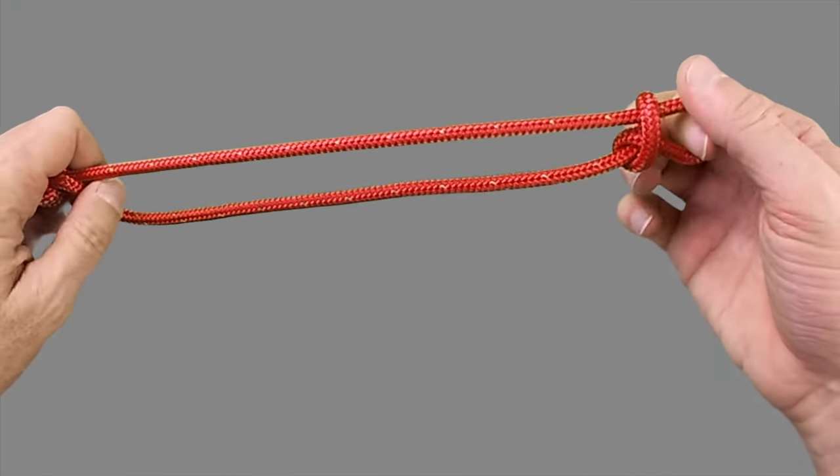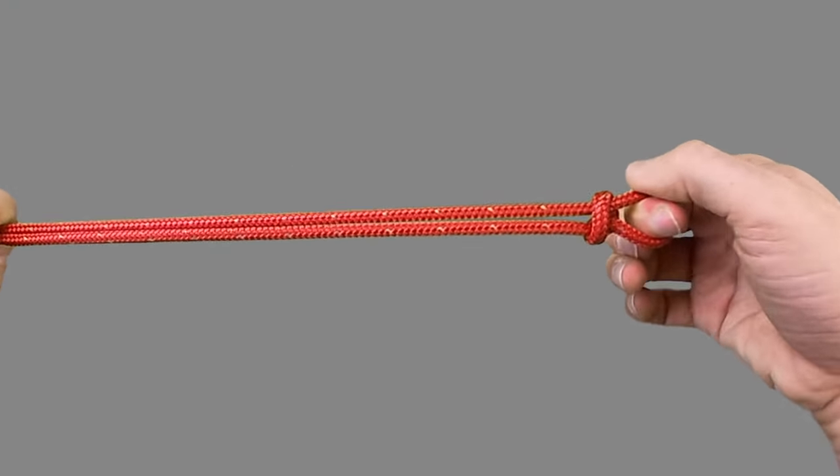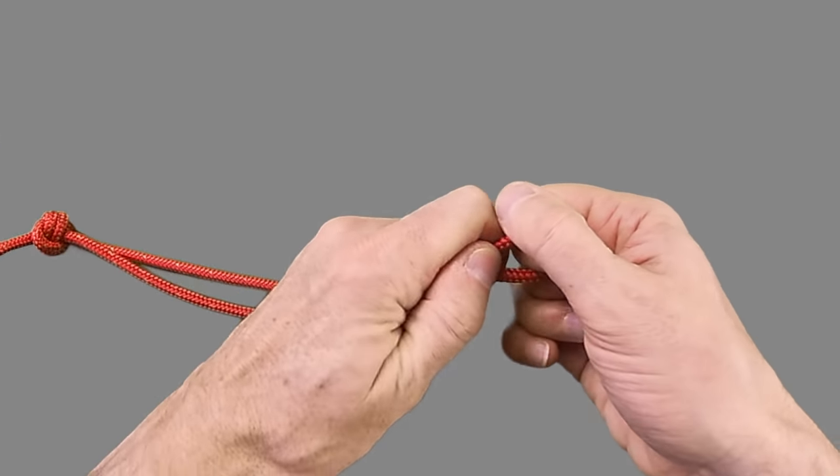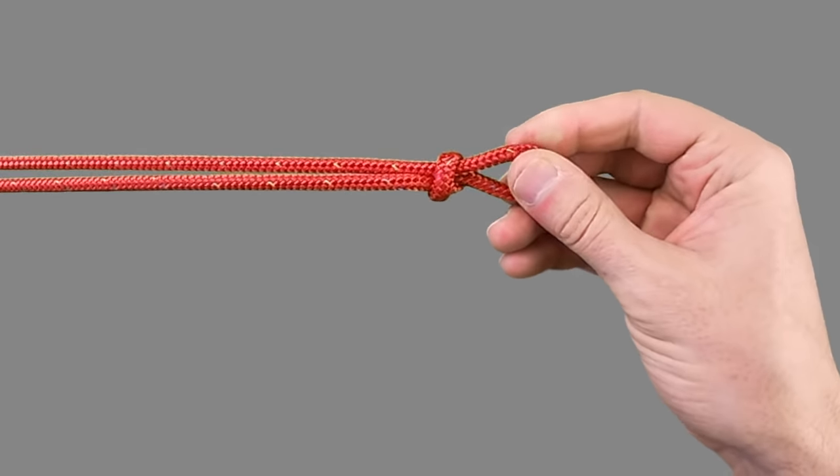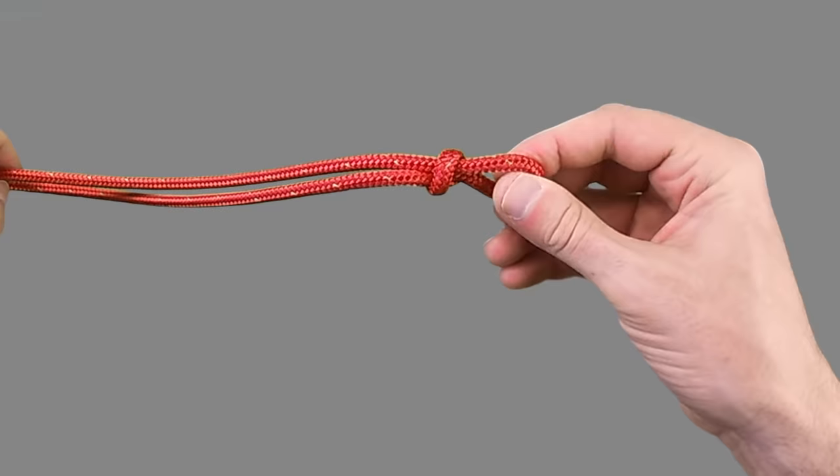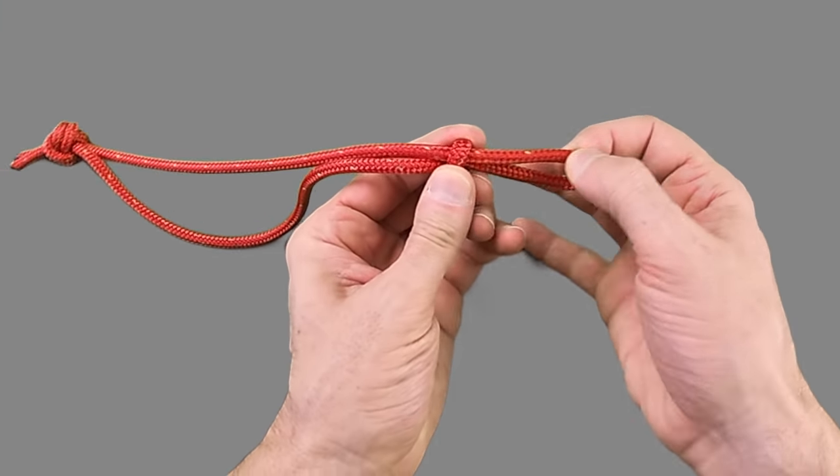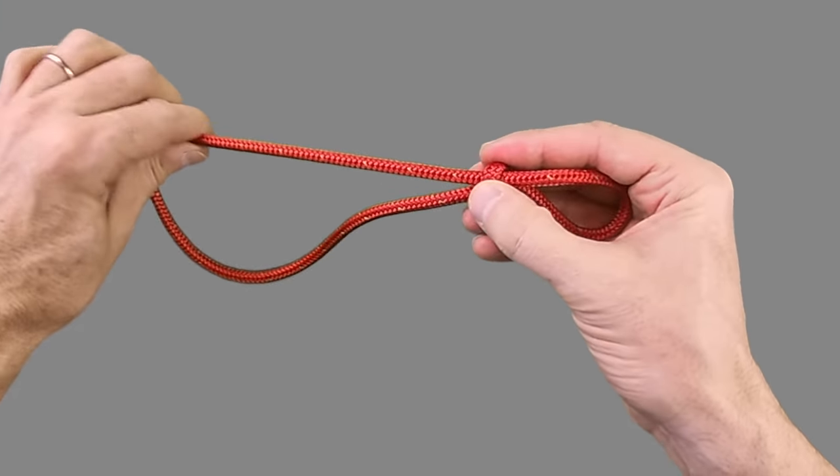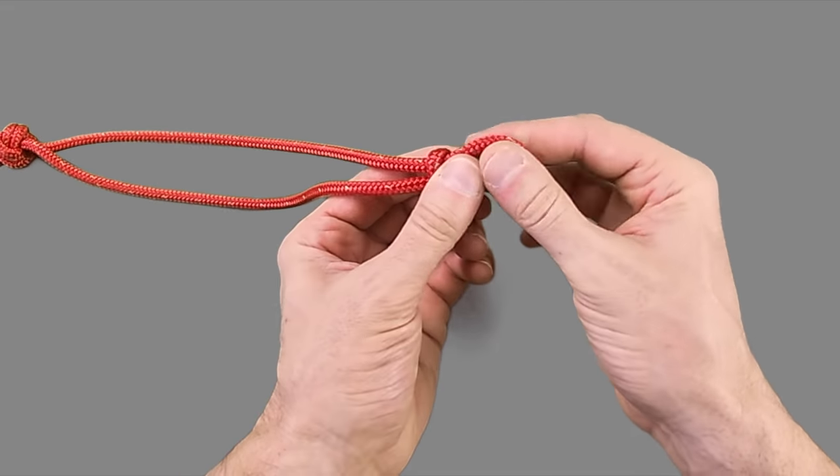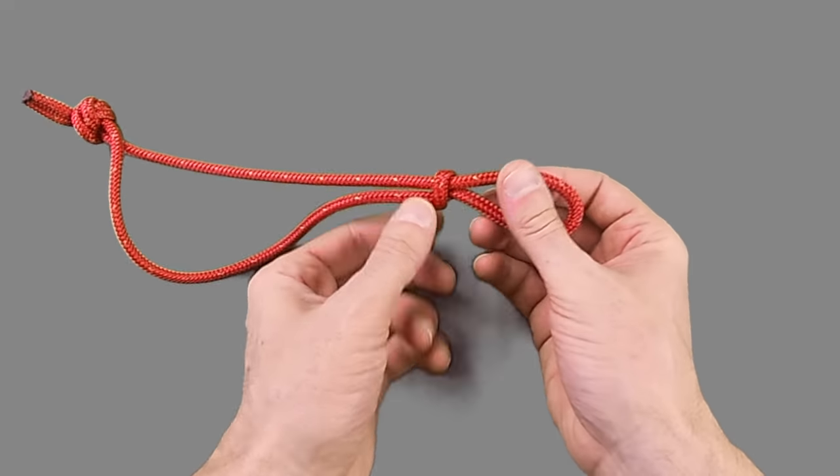Pull the knot tight and then you'll see that one of the lines can be adjusted up and down to create a big enough loop to put over the top of your stopper knot.